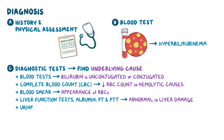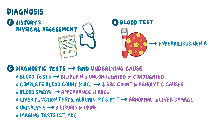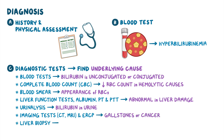Urinalysis can reveal the presence of bilirubin in urine. Imaging tests may also aid in the diagnosis, including CT scan, MRI, and endoscopic retrograde cholangiopancreatography, or ERCP for short, which may reveal conditions like gallstones or cancer. Lastly, some clients may require liver biopsy to confirm hepatocellular causes.